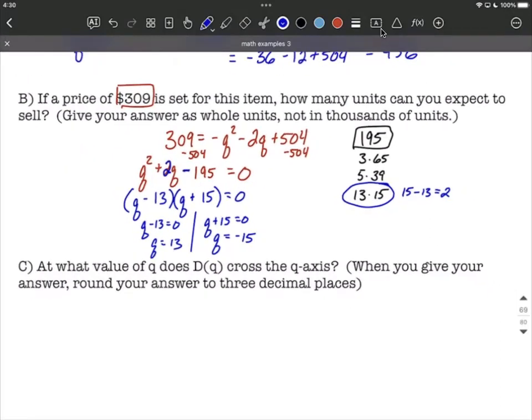So let's think about this. It looks like we have two different solutions, but do they make sense? How many units can you expect to sell if you're pricing them at $309 each? Because q is our quantity, does it make sense to have a negative number that we're selling? The answer is no. It doesn't make sense to be selling negative 15,000 units of anything. So let's get rid of the negative and just focus on q being 13, or selling 13,000 of these units.